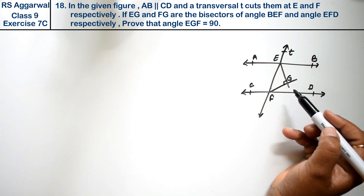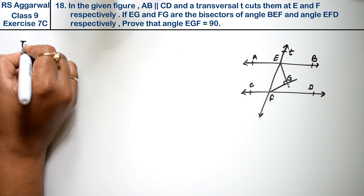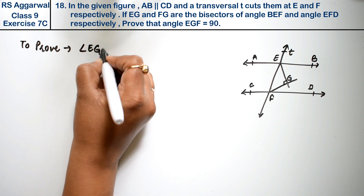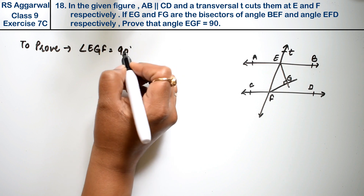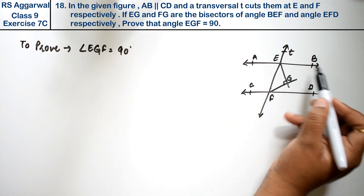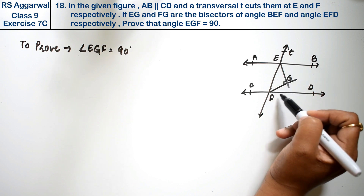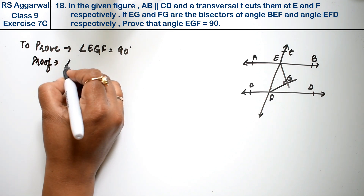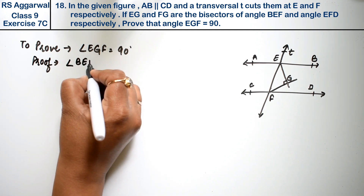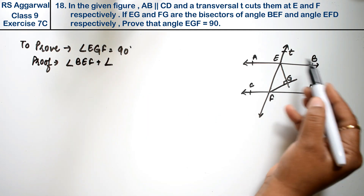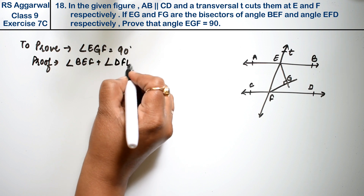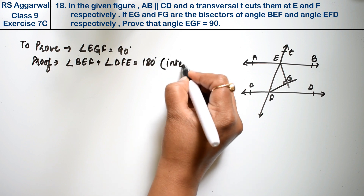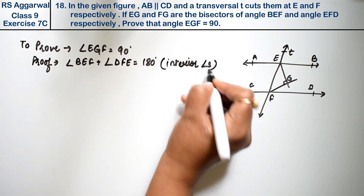To prove: angle EGF equals 90 degrees. Now, we know that AB and CD are parallel lines, so the sum of co-interior angles is 180 degrees. Therefore, angle BEF plus angle EFD is equal to 180 degrees, because these are the interior angles and their sum is 180 degrees.